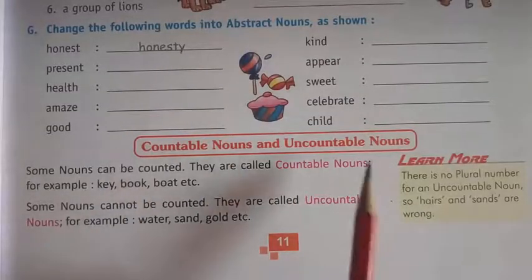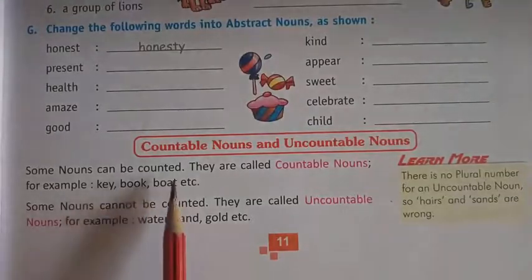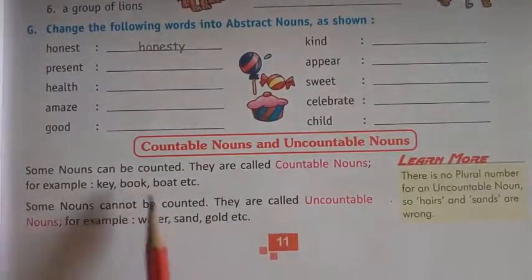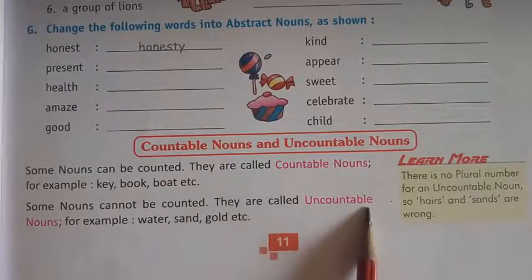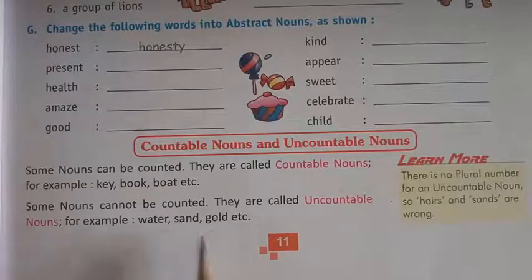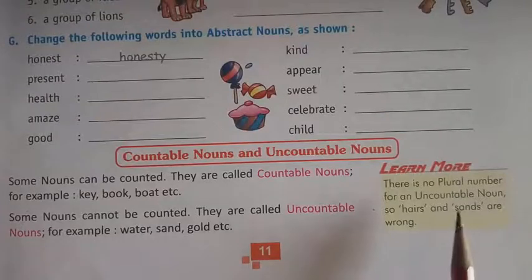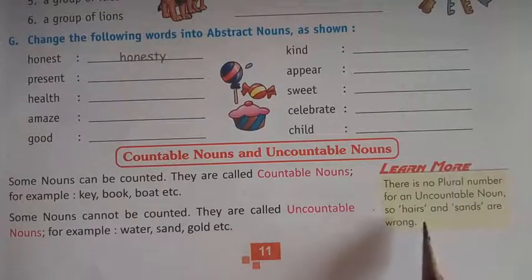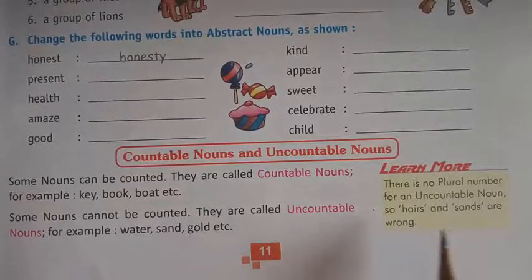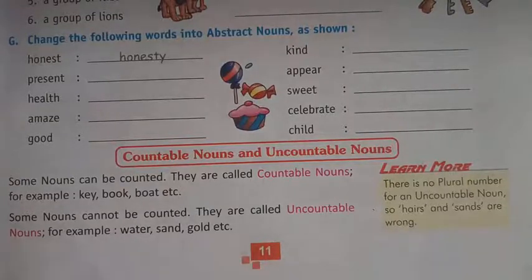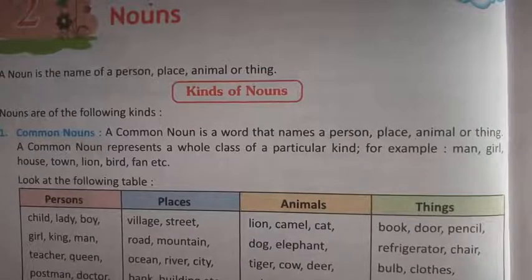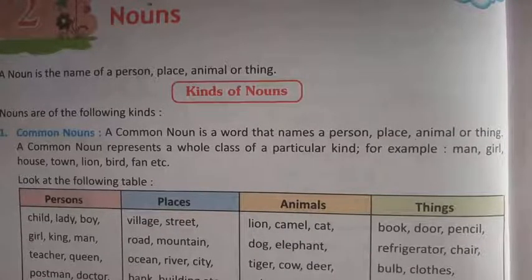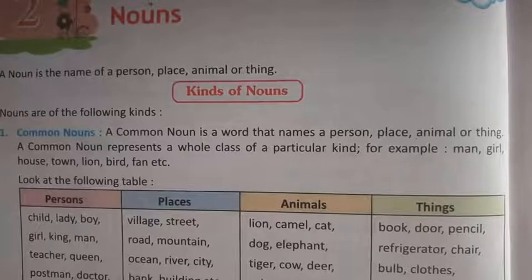Next are countable nouns and uncountable nouns. Some nouns can be counted — they are called countable nouns. For example: key, book, boat, etc. Some nouns cannot be counted — they are called uncountable nouns. For example: water, sand, gold. So in summary: first — Common Noun, second — Proper Noun, third — Collective Noun, fourth — Material Noun, fifth — Abstract Noun, then two more — Countable Noun and Uncountable Noun. I hope ye chapter समझ में आया होगा. Thank you. Have a nice day.